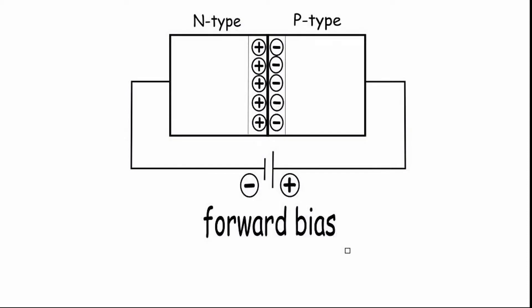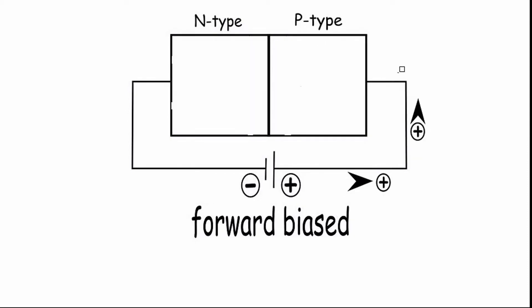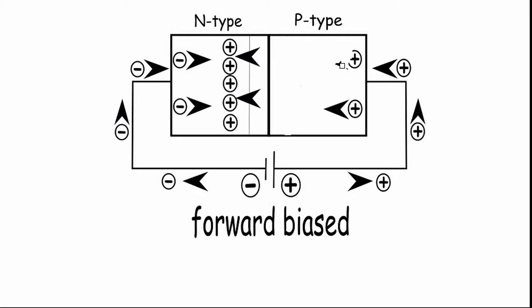When the diode is forward biased, due to the negative terminal on the N-side, electrons from the N-side are pushed towards the P-region. Similarly, due to positive voltage on the P-side of the diode, holes from the P-region are pushed towards the N-side. Due to this, the charges on both sides get neutralized. Hence, the width of the depletion region starts reducing due to reduction in the barrier potential.